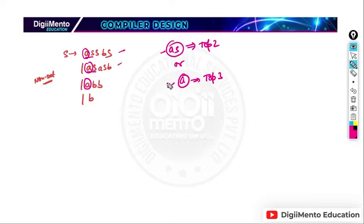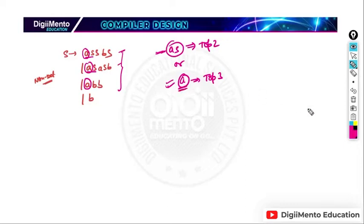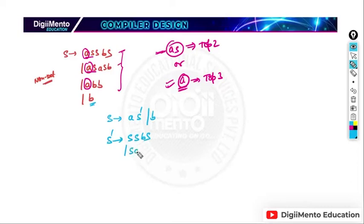We can take either the first two productions with common prefix 'aS', or the first three with common prefix 'a'. Let's consider 'a' as the common prefix. After factoring out 'a', we get: S → a S' | b, and S' → sSbs | sasb | b. But S' still has a common prefix 's', so it's still non-deterministic.